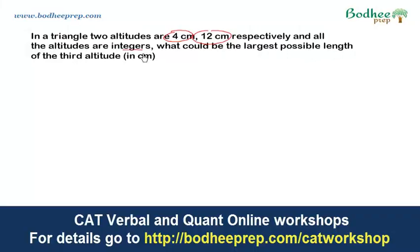In this question, in a triangle two altitudes are given as 4 cm and 12 cm respectively, and the third altitude is also an integer. We have to find the largest possible value of the third altitude.